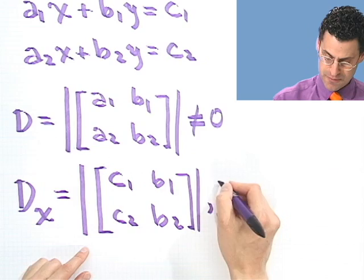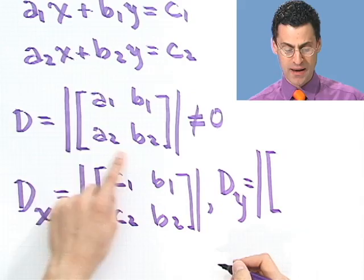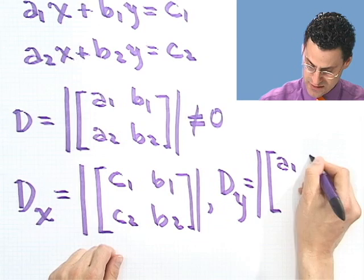And then the last thing I'm going to find is going to be D sub y, and I bet you can figure out what that is. It's the analogous thing. I go back to here, but in place of the y column, I put these in. So I have a₁, c₁, a₂, c₂.